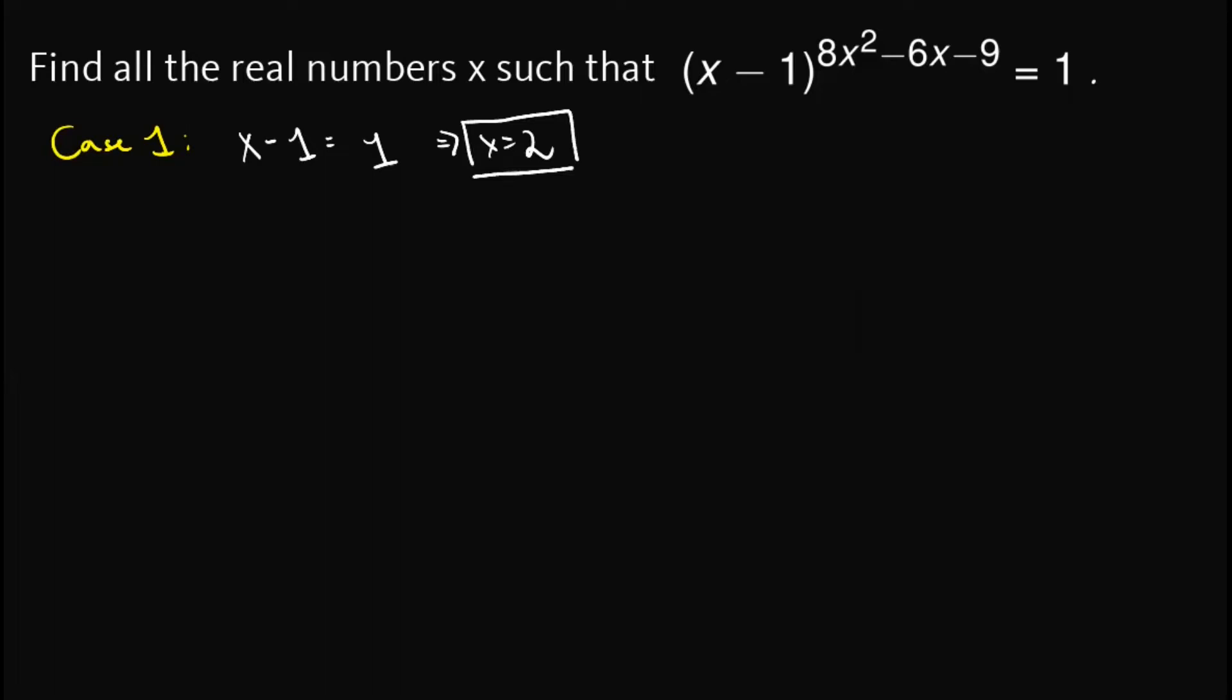Next let's have case 2. When will this expression be equal to 1? The second time would be if the exponent is equal to 0. But take note that this base must not be equal to 0, since 0 raised to 0 is undefined or does not exist. It should be any number n raised to 0, where n is not equal to 0.